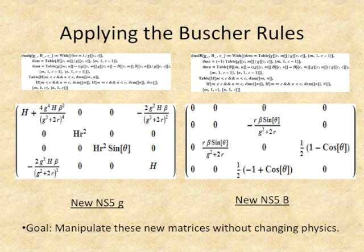The first thing I did was apply the Buscher rules, since they're what you use to find T-dual objects. I applied dual G and dual B, and got a new metric for the NS5 brane and a new B field for it. There are some similarities between these and what the originals were, but there are also some additional components.